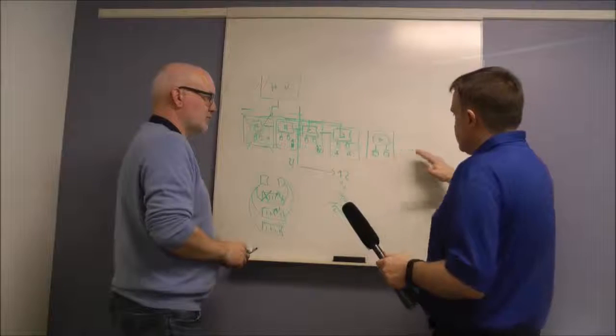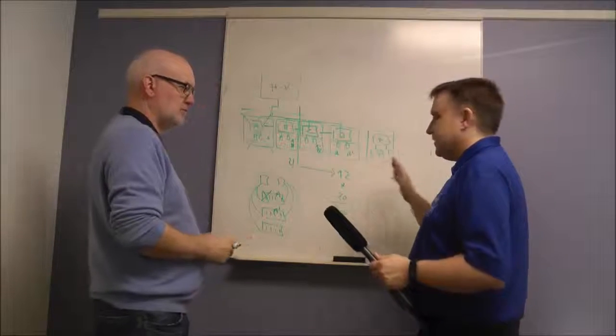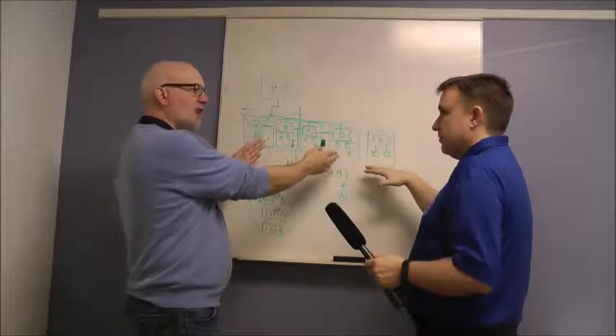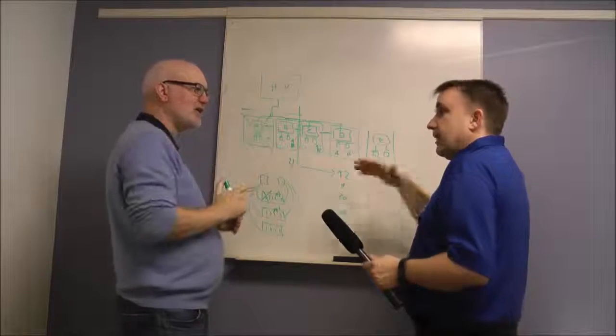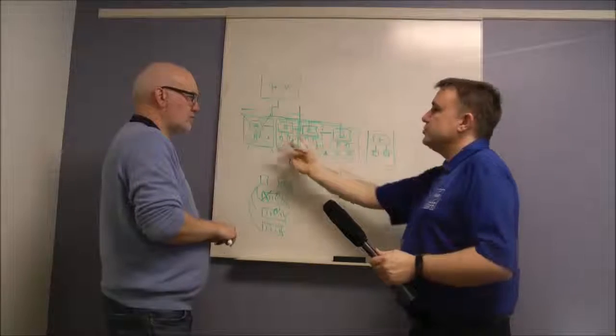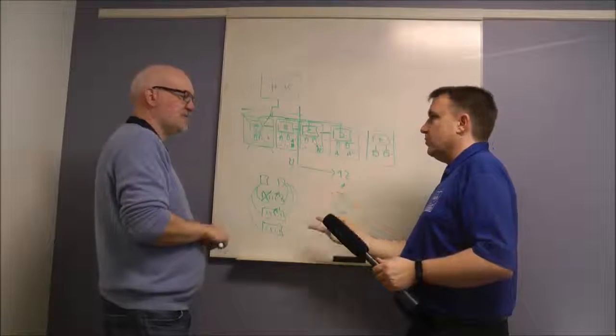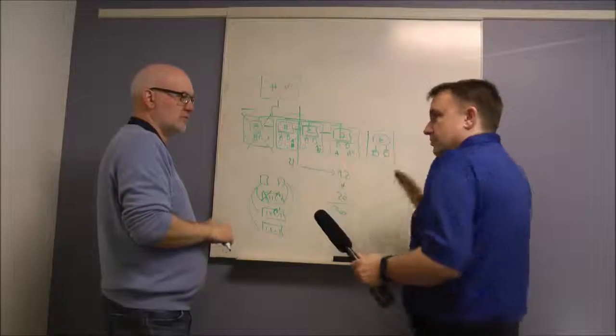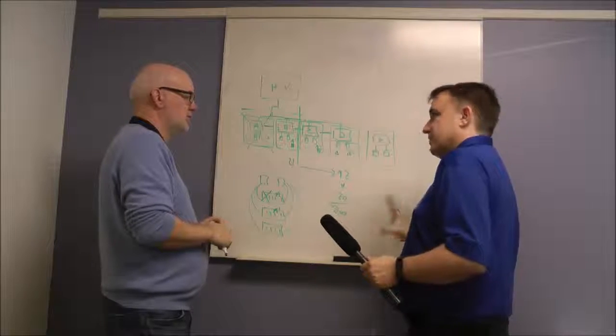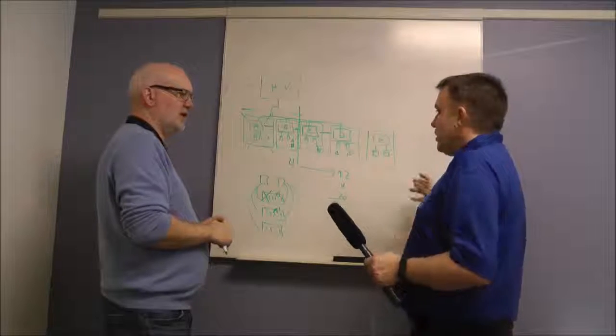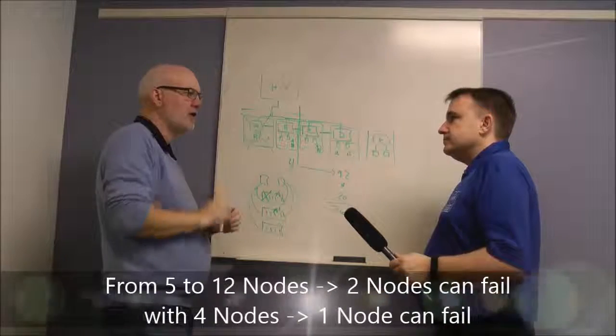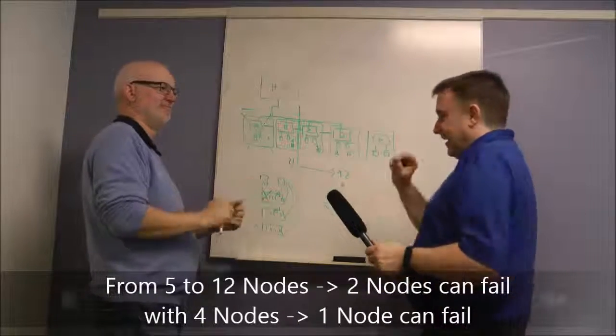You have a quorum or a majority of nodes. You would add a fifth node over here and then you can tolerate two nodes disappearing completely. It could even be one node is being serviced, I have to change a RAM or something in it, and then while that is happening I have a failure which you didn't plan for, but the system is just happily humming along. If you extend it to 12, also two nodes can fail, that's correct. A simple way to think about it is from five to 12, it's two nodes. In the four, it's one.